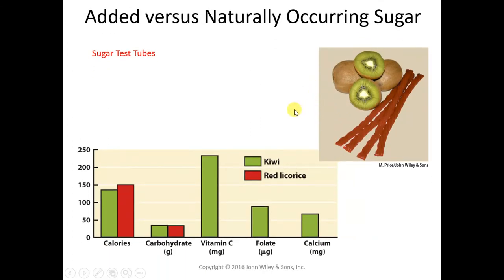When we talk about sugars in fruits, naturally occurring sugars in an apple or blueberries — the amount of sugar is typically less, and it comes with fluids, fiber, vitamins, minerals, and phytochemicals. So a piece of fruit is a much better choice compared to something like candy.